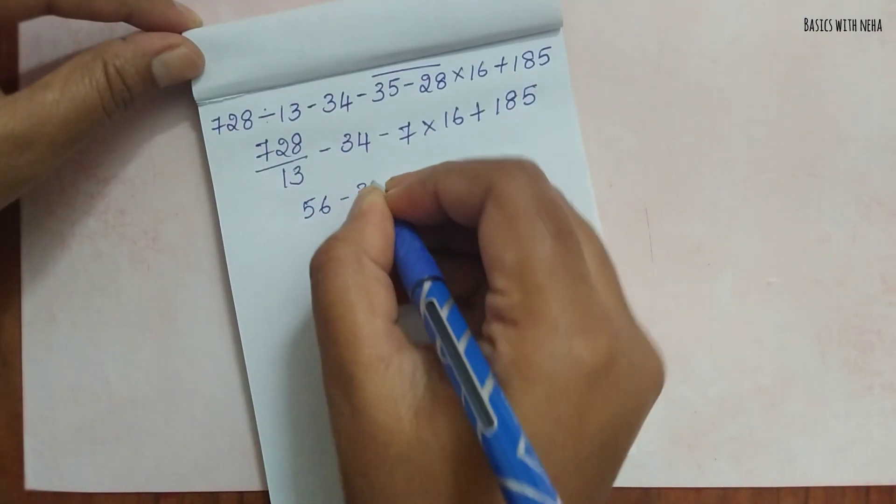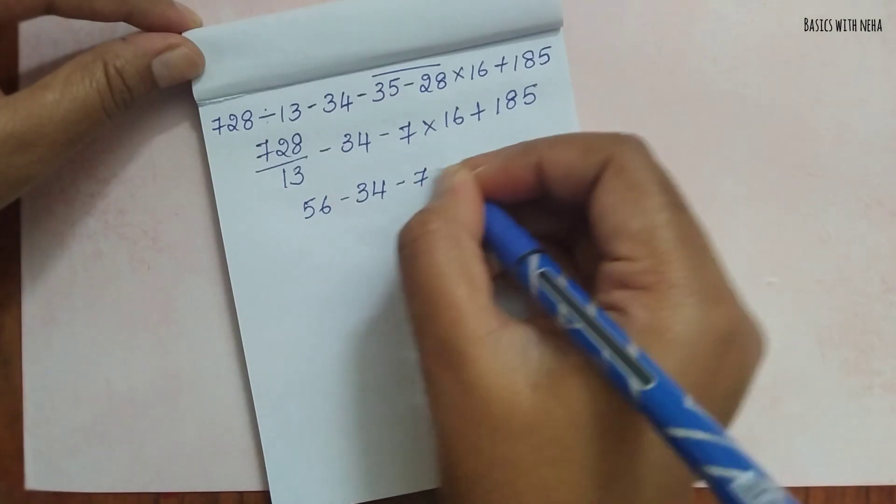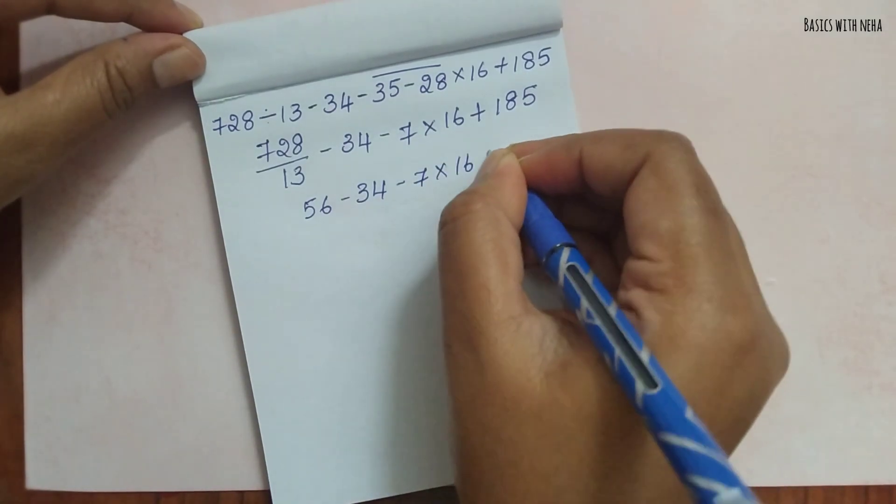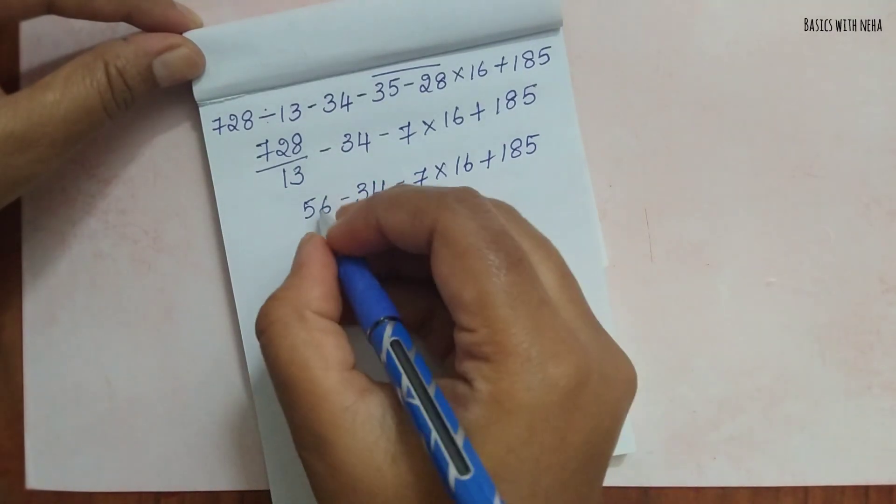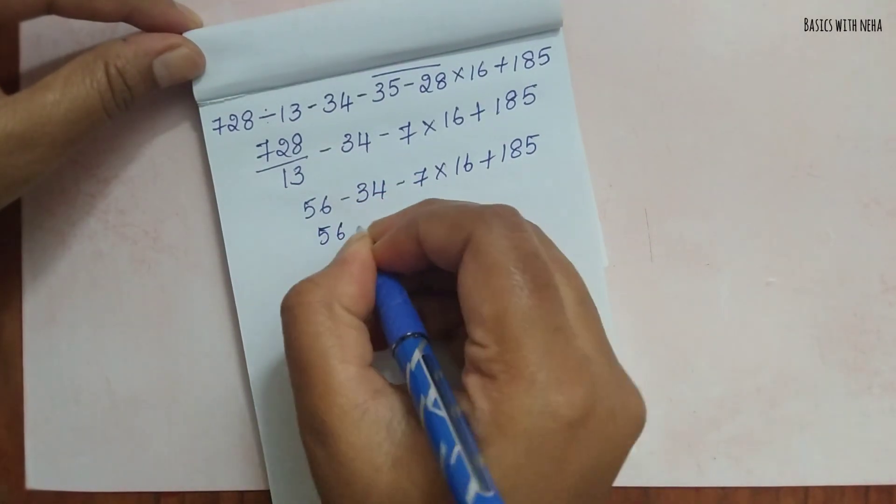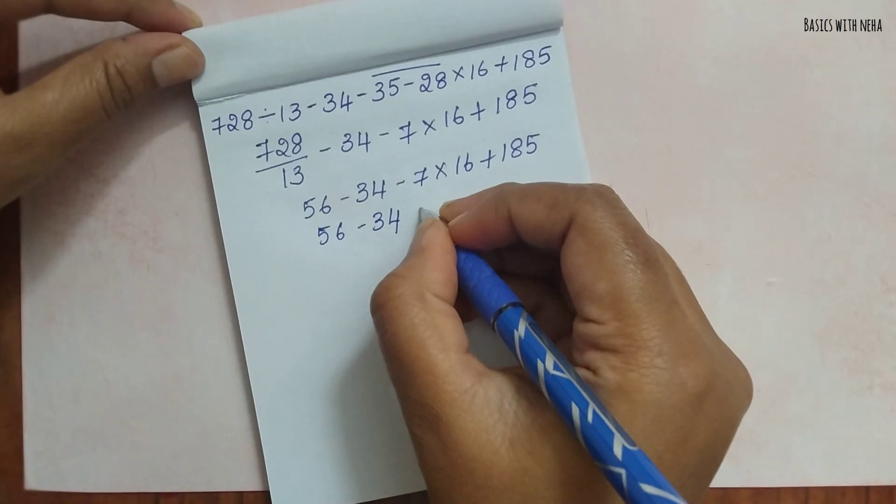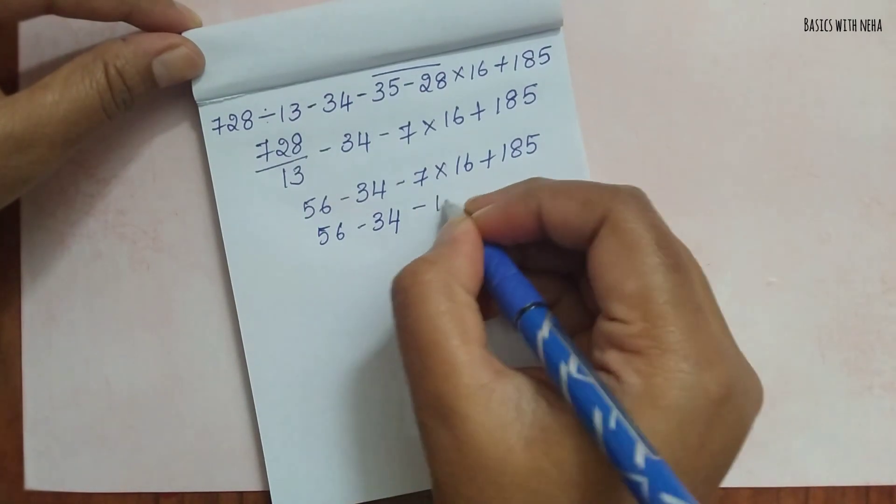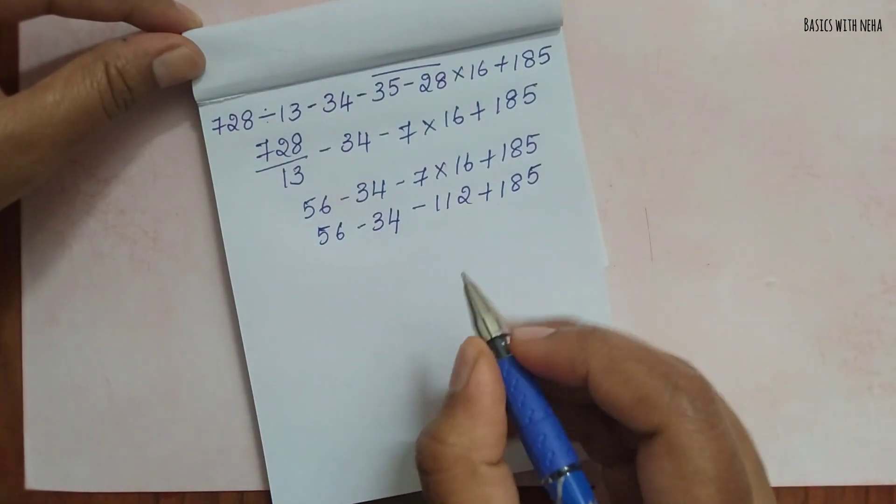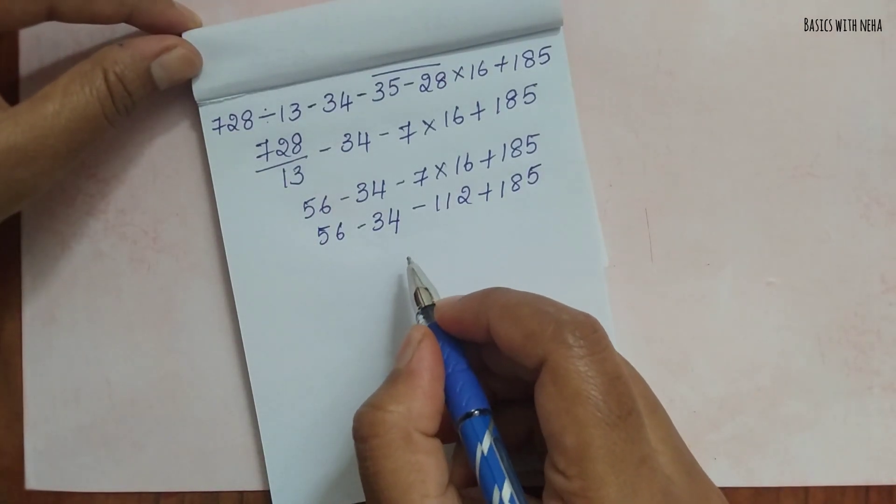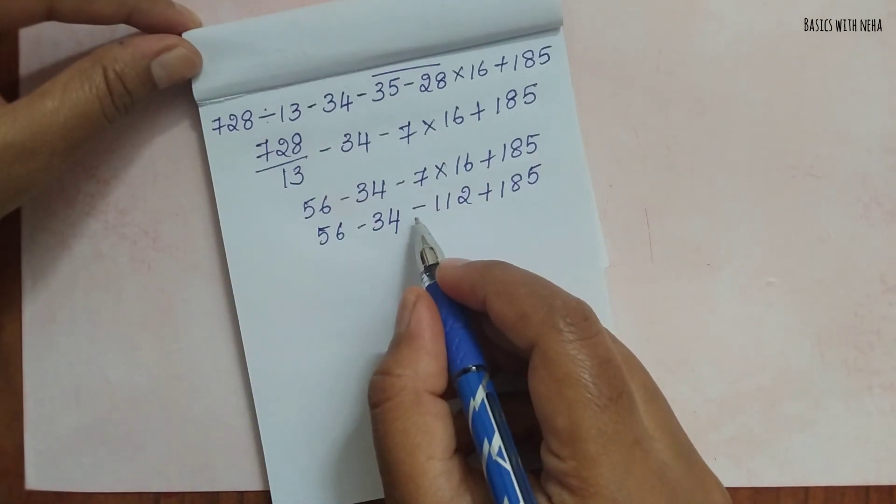Minus 34 minus 7×16 plus 185. Next we should do multiplication, so 56 minus 34 minus 112 plus 185. Now BODMAS - after addition we should do the subtraction.